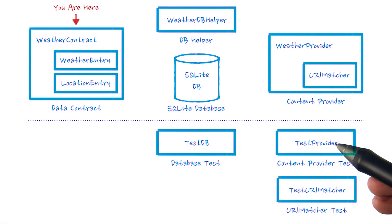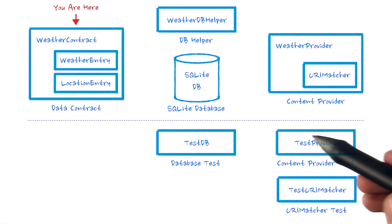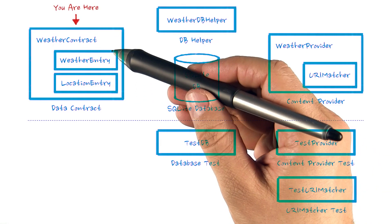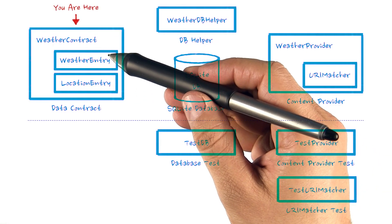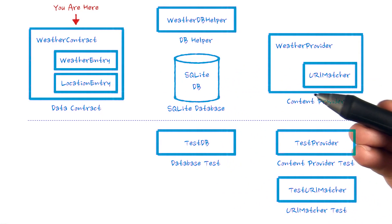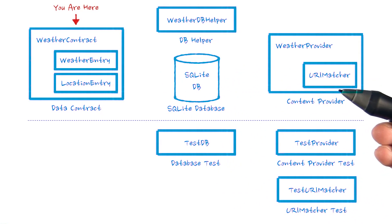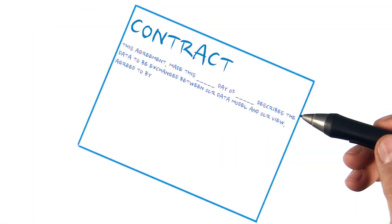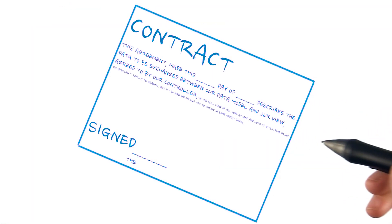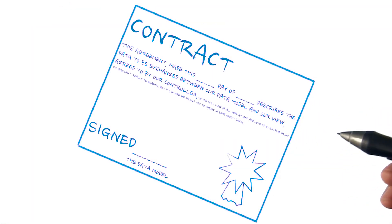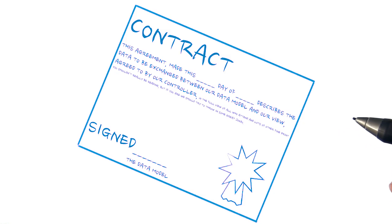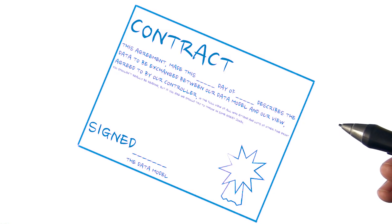We will begin building our database for Sunshine by defining our weather contract. You might ask, what is a contract? A contract is an agreement between the data model, storage, and views, presentation, describing how information is accessed.